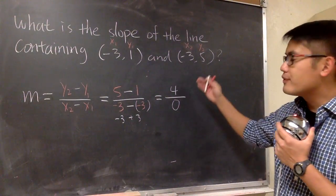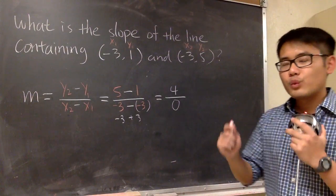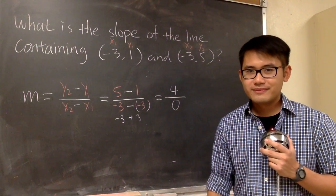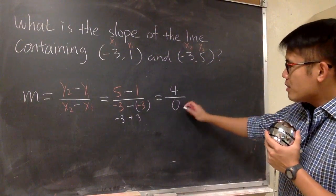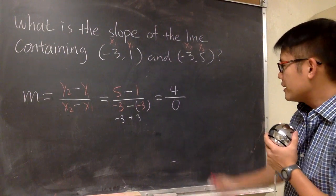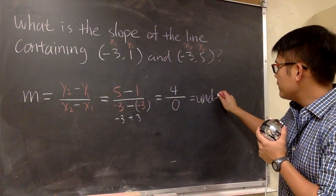At the end, this is what we have: 4 over 0. But what's the response for this? The answer to that, remember, we cannot have a 0 in the denominator. This right here is undefined.